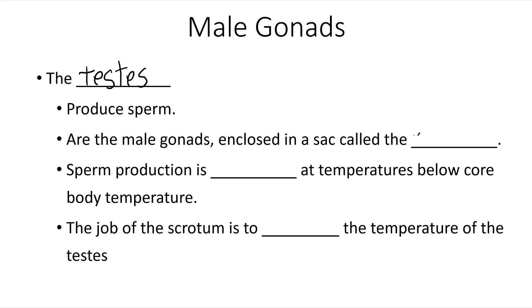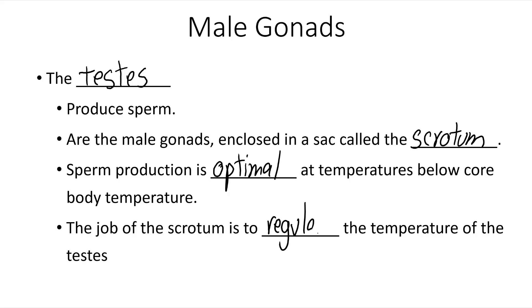Sperm production is optimal at temperatures below core body temperature. This is the reason why the testes are external structures, and the job of the scrotum is to regulate the temperature of the testes.